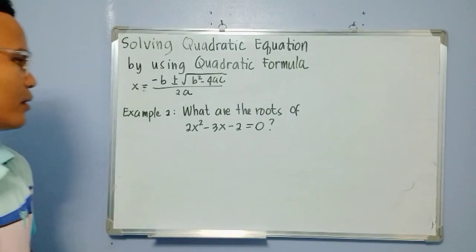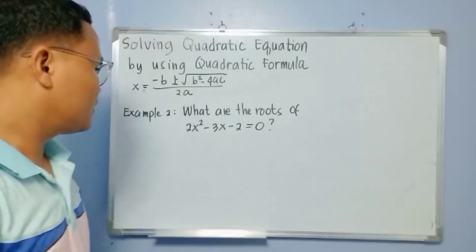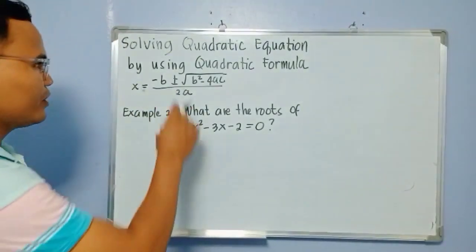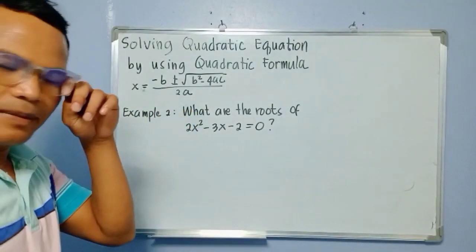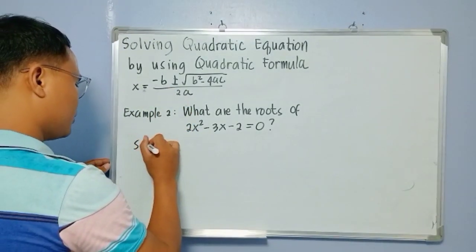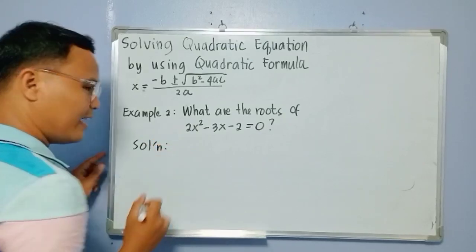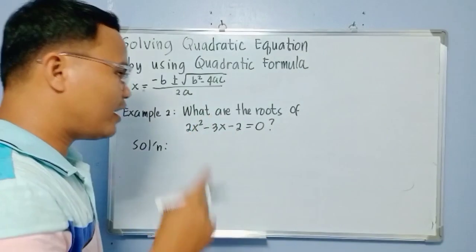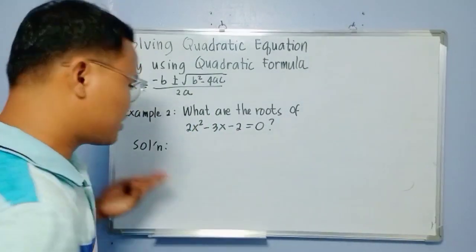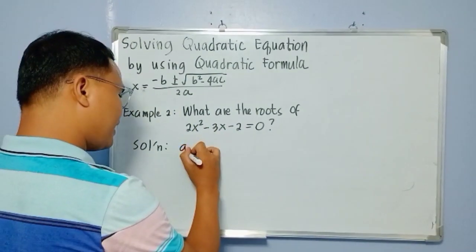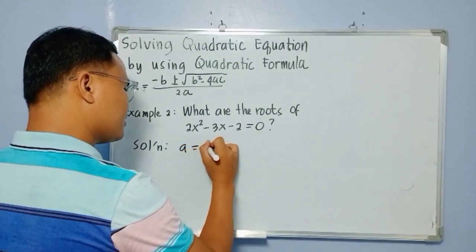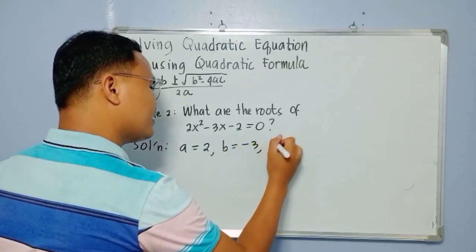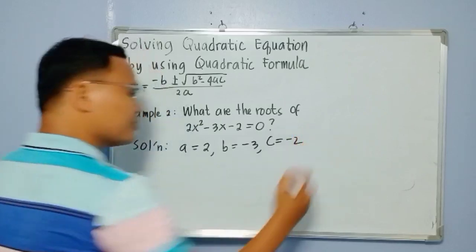Example number 2: What are the roots of 2x squared minus 3x minus 2 equals 0 by using the quadratic formula? Let us identify the value of a, the value of b, and the value of c in our equation. The value of a is equal to 2, the value of b is negative 3, and the value of c is negative 2.